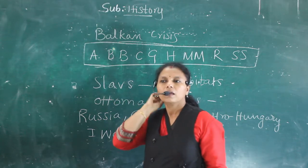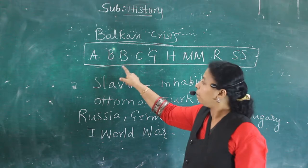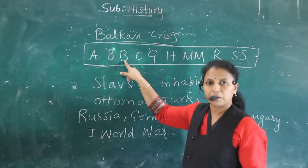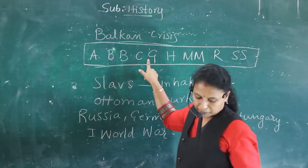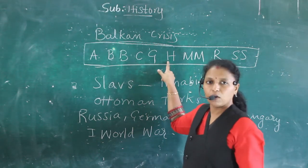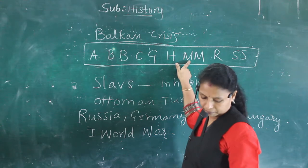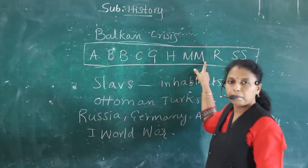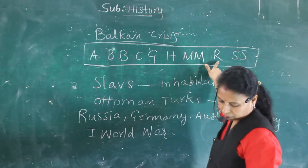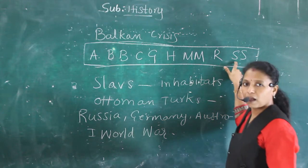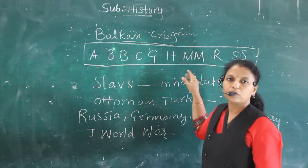You can study it down. A means Albania, B means Bosnia, D means Bulgaria, C means Croatia, G means Greece, H means Herzegovina, M means Macedonia, M means Montenegro, R means Romania, S means Serbia, and S means Slovenia.